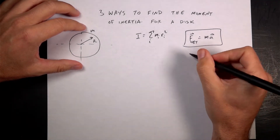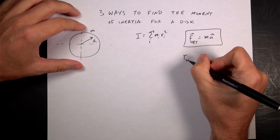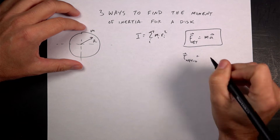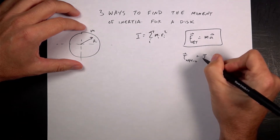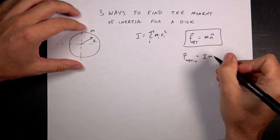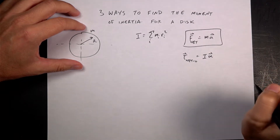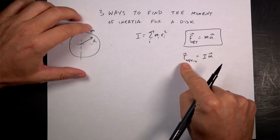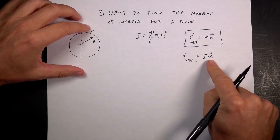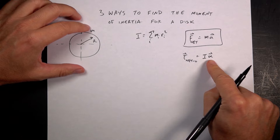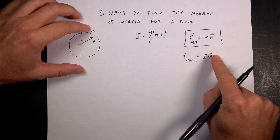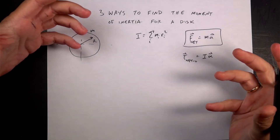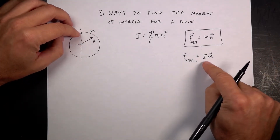When we talk about rotational objects, we have torque-net about some point O equal to — and this is the easy version, there is a more complicated version — I·alpha vector. This says the net torque on an object tells you how the angular velocity changes, which is the angular acceleration. We have this property that says how hard it is to change the rotational motion of an object, and we call that the moment of inertia.